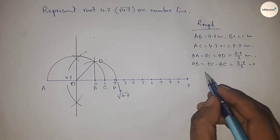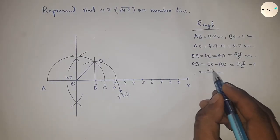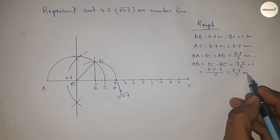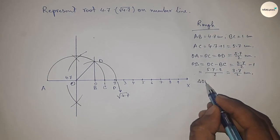Next, OB equals OC minus BC. Putting the values of OC and BC and calculating, this equals 3.7 by 2 centimeters.